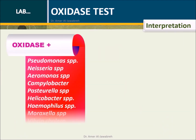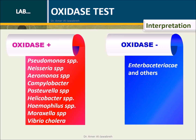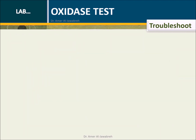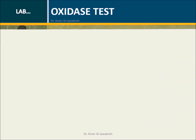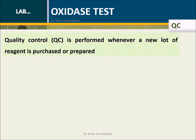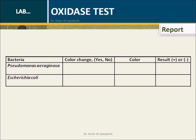Interpretation: Oxidase positive bacteria vs. oxidase negative bacteria. Troubleshoot: possible causes listed. Quality control is performed whenever a new lot of reagent is purchased or prepared. Listed below are ATCC bacteria and their corresponding results. Report results using the provided form.